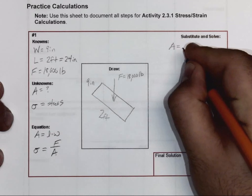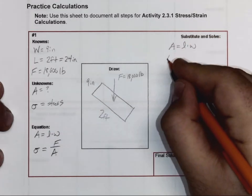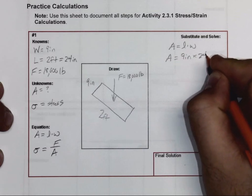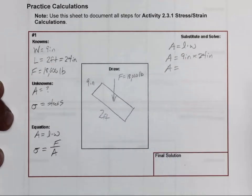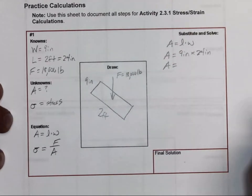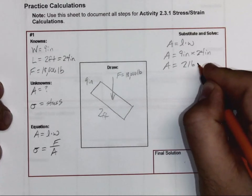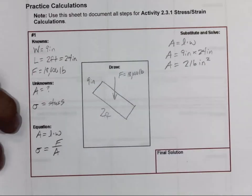On this side, area is length times width. So here, nine inches times 24 inches. When I multiply those, my area is going to give me 216 square inches.